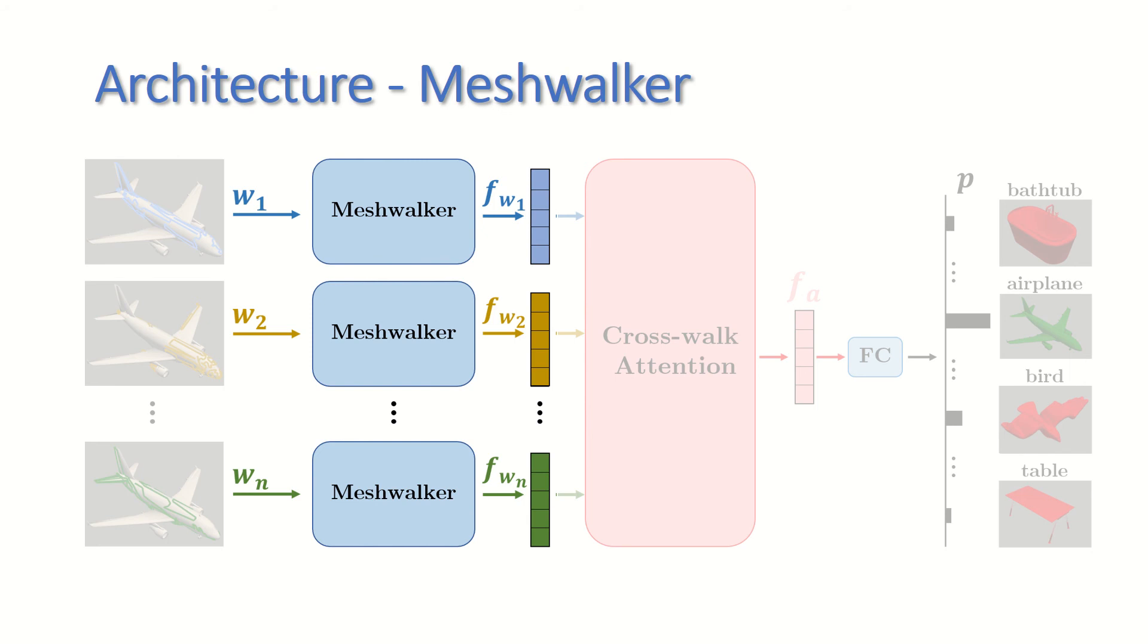Given a random walk, we apply the MeshWalker for each walk separately. A different feature vector is learned for each walk, describing the mesh from the specific walk's perspective.